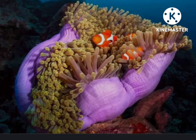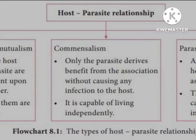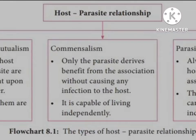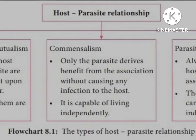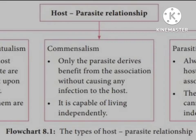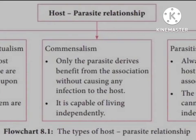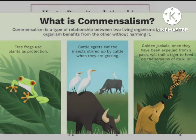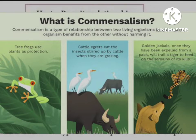The second relationship is commensalism. It is an association in which the parasite only is deriving benefit without causing any injury to the host. A commensal is capable of living an independent life — meaning the parasite benefits but the host gets no injury, and the parasite can survive independently without the host.